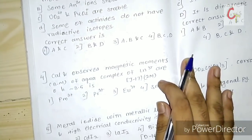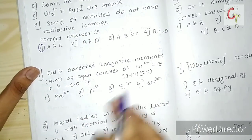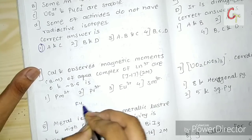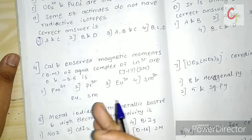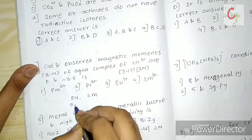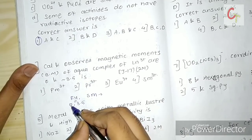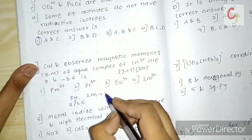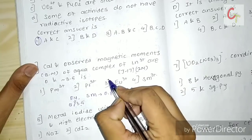Next is a 2-mark question from 2017: calculated and observed magnetic moments of lanthanide complexes differ. Generally, europium and samarium show this exception. Europium shows calculated 0 and observed 3.5, while samarium shows calculated 0.85 and observed 1.4. So the correct answer is europium.